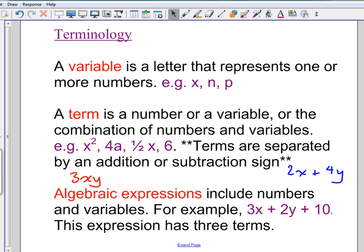The last thing to make a note of is the term algebraic expressions. And this is essentially like a mathematical sentence that includes numbers and variables put together. It's an algebraic equation when it's actually equal to something. So in this example, 3x plus 2y plus 10, there are three terms, and that's an expression. If I wrote 3x plus 2y plus 10 equals 17, then it becomes an algebraic equation.